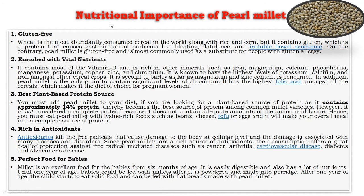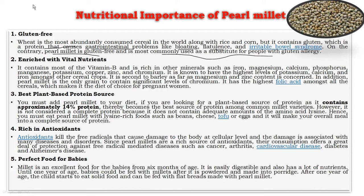Next, the nutritional importance of pearl millet. First, it is gluten free. While rice and corn are abundantly consumed cereals, they contain gluten, a protein that causes gastrointestinal problems like bloating, flatulence, and irritable bowel syndrome. Pearl millet is gluten free and is most commonly used as a substitute for people with gluten allergy. It is also enriched with vital vitamins — vitamin B — and rich amounts of iron, magnesium, calcium, phosphorus, manganese, potassium, copper, zinc, and chromium, making it the highest in potassium, calcium, and iron among other cereals.